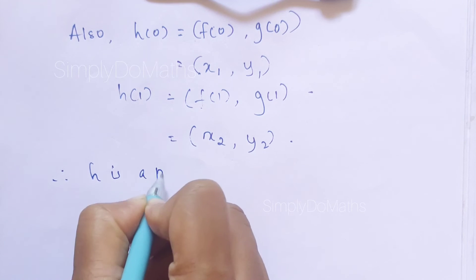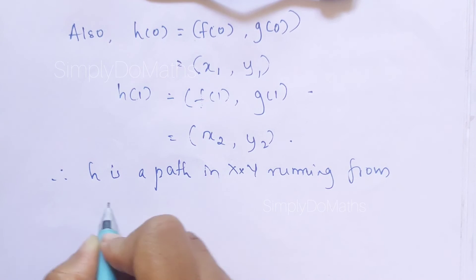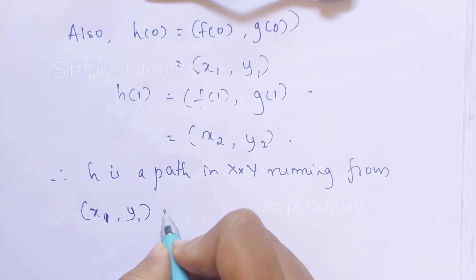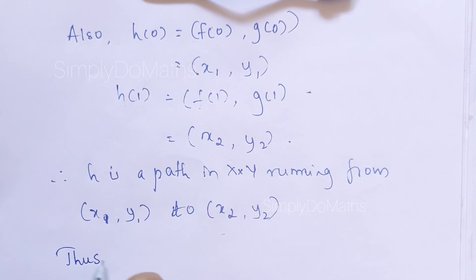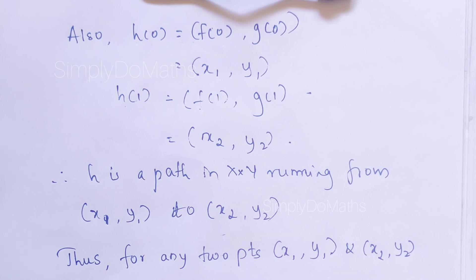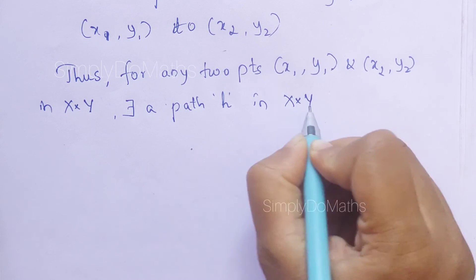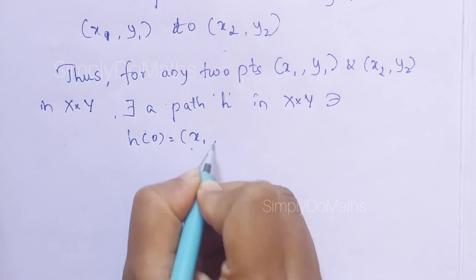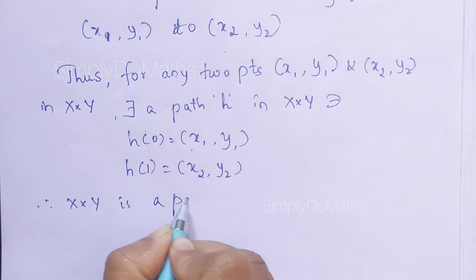Therefore, h is a path in X×Y running from h(0) to h(1). h(0) is (x₁, y₁) and h(1) is (x₂, y₂). Thus, concluding for any two points (x₁, y₁) and (x₂, y₂) in X×Y, there exists a path h in X×Y such that h(0) equals the ordered pair (x₁, y₁) and h(1) equals the ordered pair (x₂, y₂). Therefore, X×Y is a path-connected space. This proves the result.